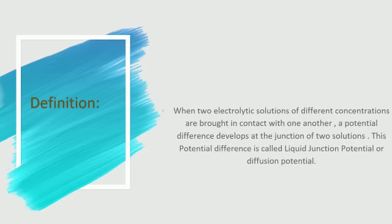We define liquid junction potential as follows: when two electrolytic solutions of different concentrations are brought into contact with one another, a potential difference develops at the junction of the two solutions. This potential difference is called liquid junction potential or diffusion potential. We call it diffusion potential because when concentrations differ, ions always move from high concentration to low concentration, which we call diffusion, and this process generates the potential.